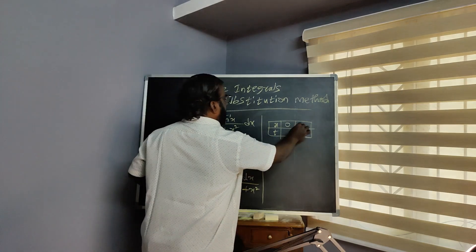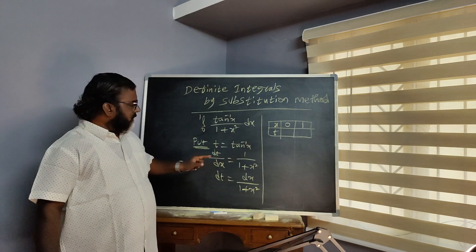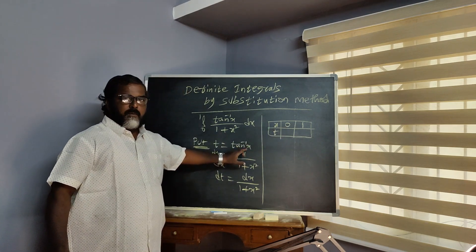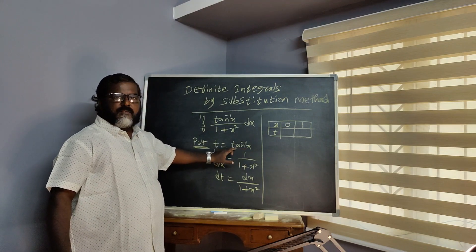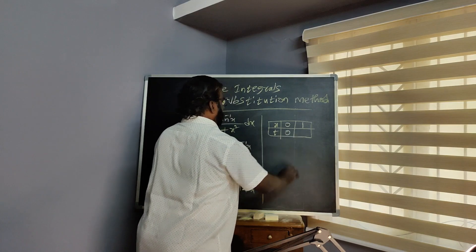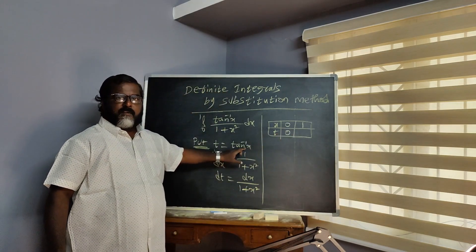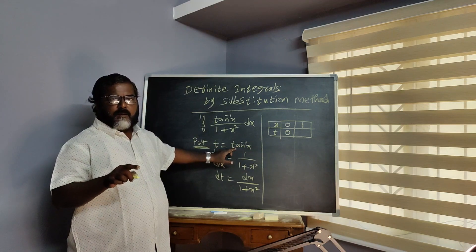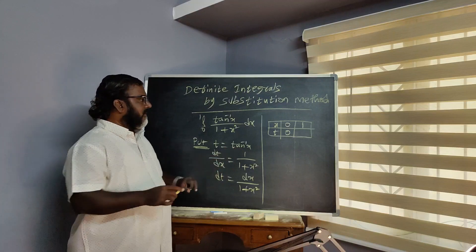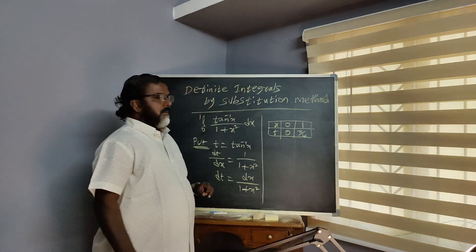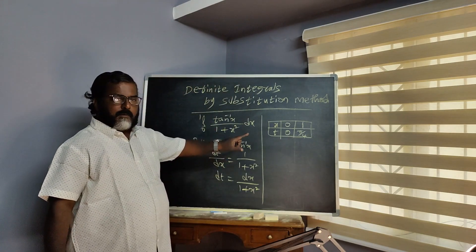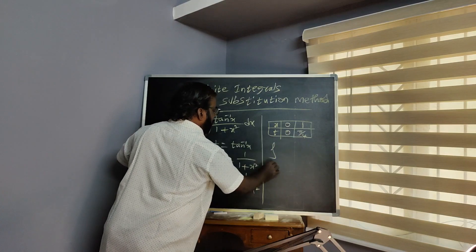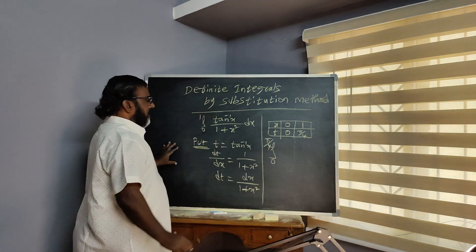Now we are changing into T. First we take 0: when X equals 0, T is equal to tan inverse 0, so T equals 0. Next, when X equals 1, T is equal to tan inverse 1. Tan 45 is 1, so 45 degrees means pi by 4. Therefore, the new limits are 0 to pi by 4.